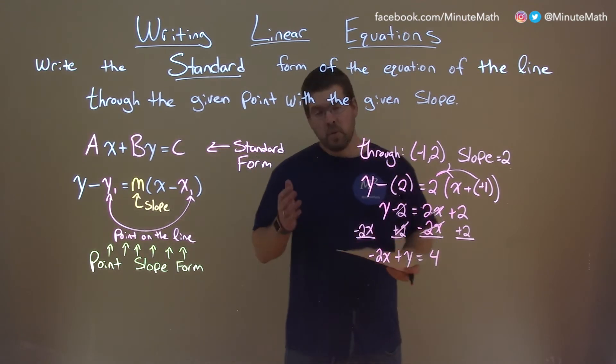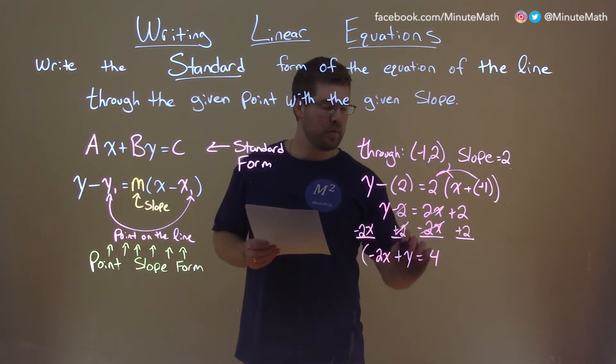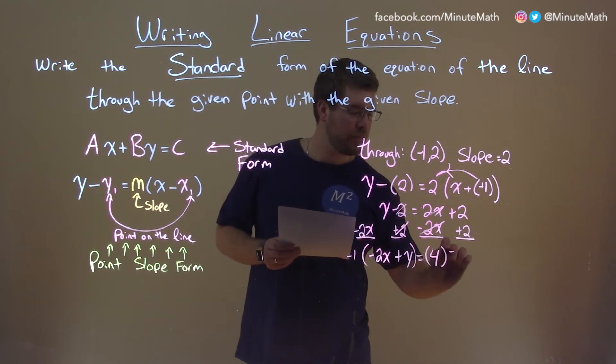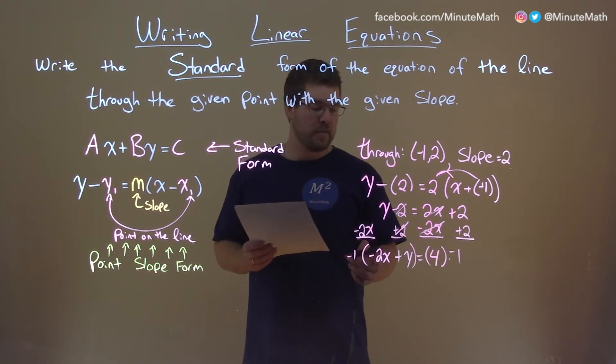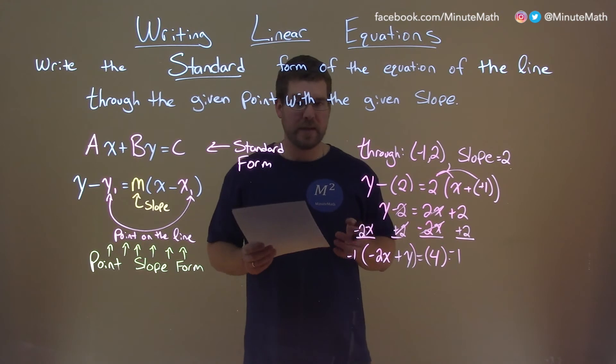Now if you want to have a positive a value, all you need to do is multiply both sides by negative 1. And what that does is take the value we found and really makes a positive and still keeps everything kosher here.